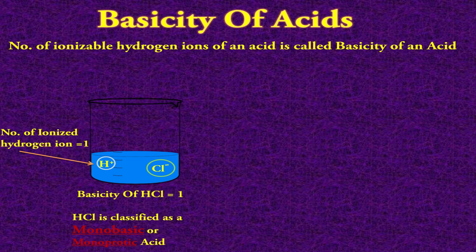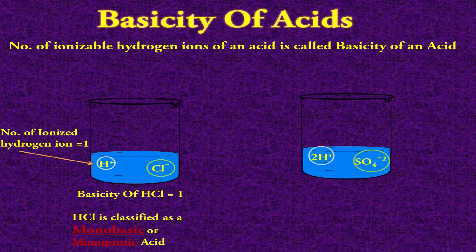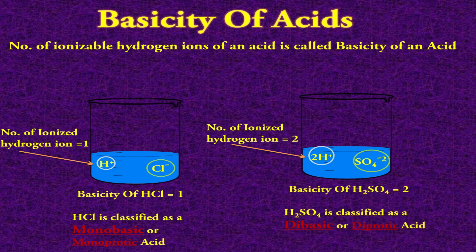On the basis of this basicity value, HCl is classified as a monobasic acid or monoprotic acid. We have another example: sulfuric acid, H₂SO₄. When this acid dissolves in water to make an aqueous solution, it dissociates into its ions — it gives 2 hydrogen ions and a sulfate ion SO₄²⁻. So the number of ionized hydrogen ions in the case of sulfuric acid is 2, and its basicity value classifies it as a dibasic or diprotic acid.